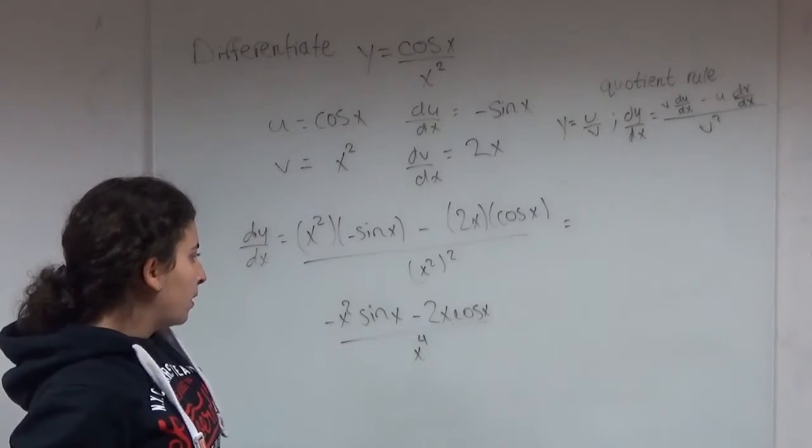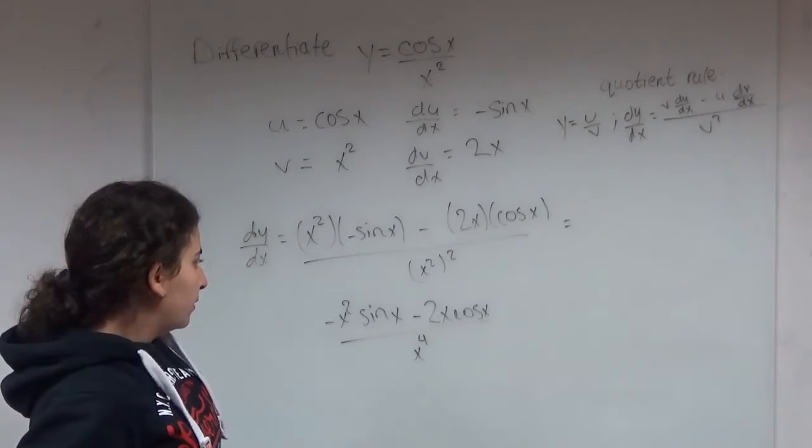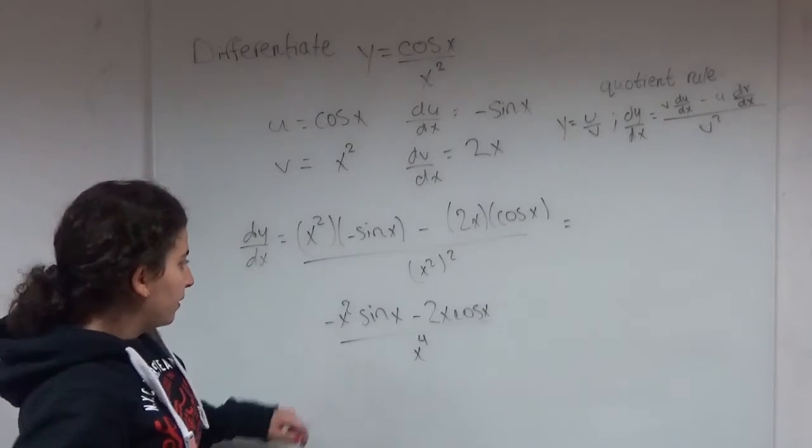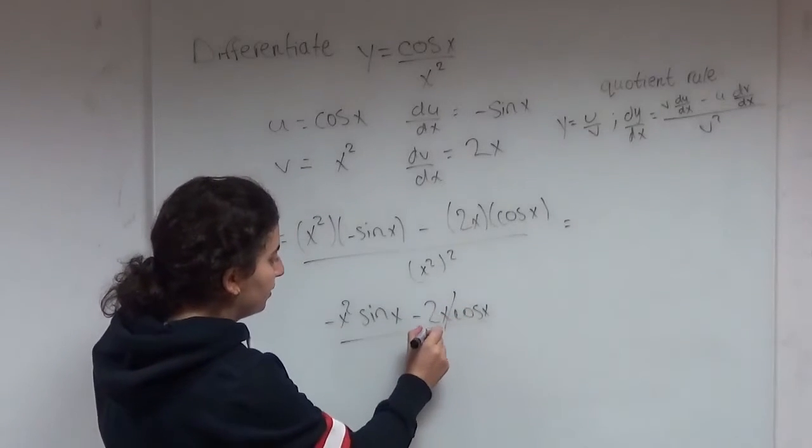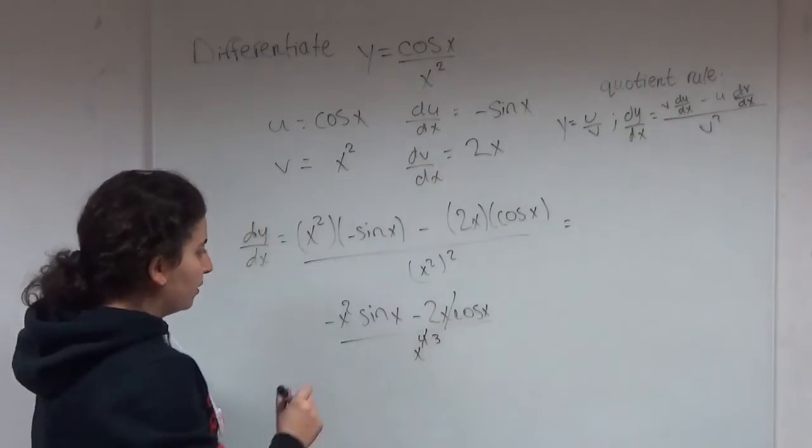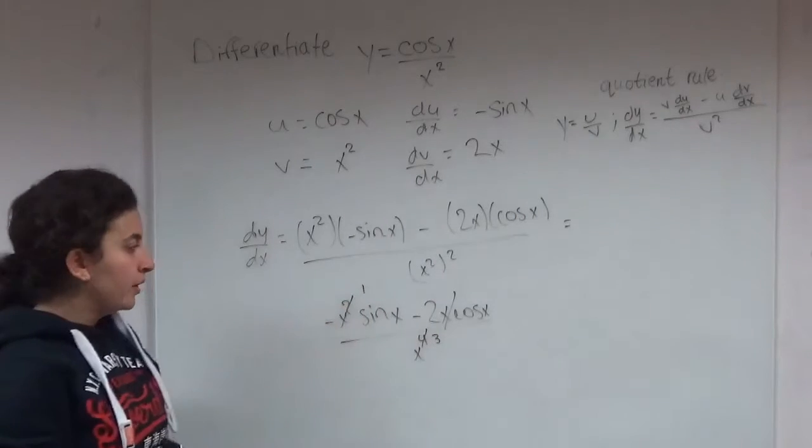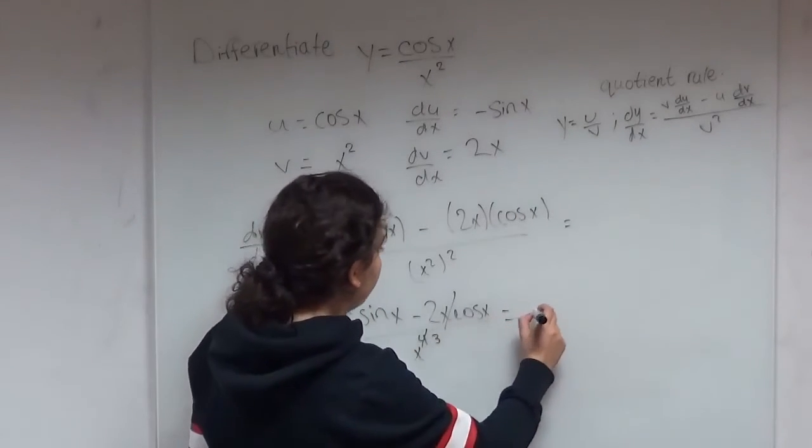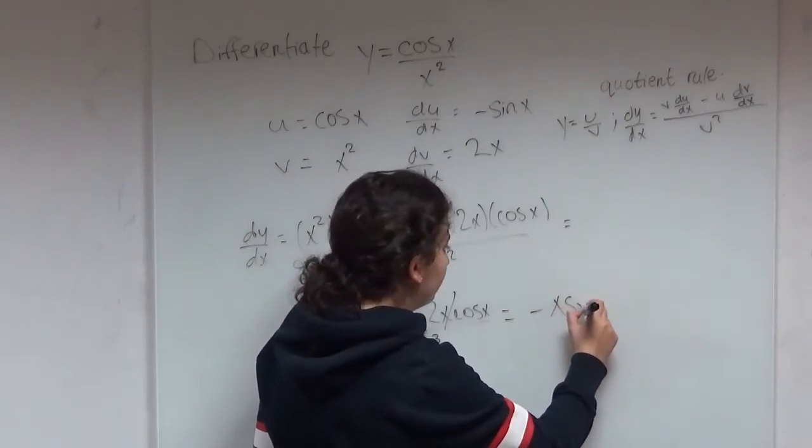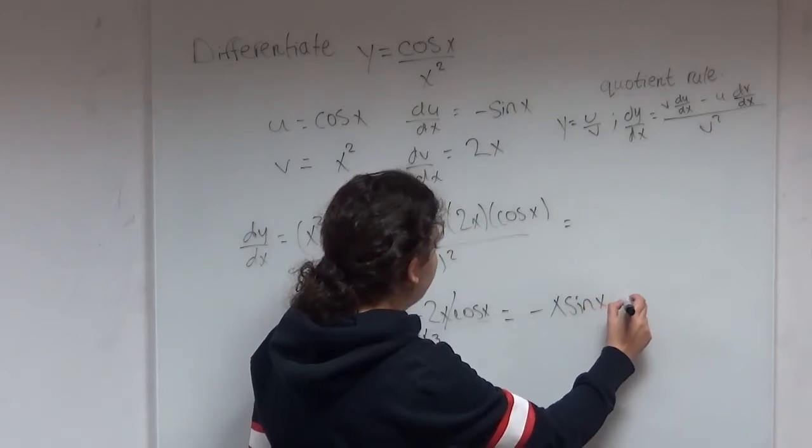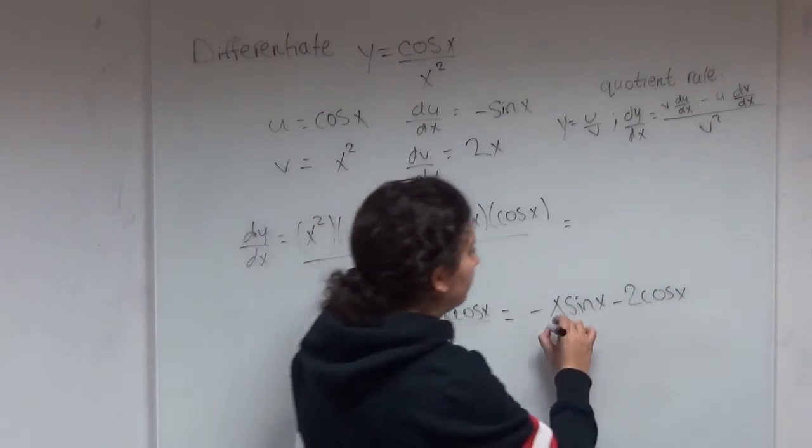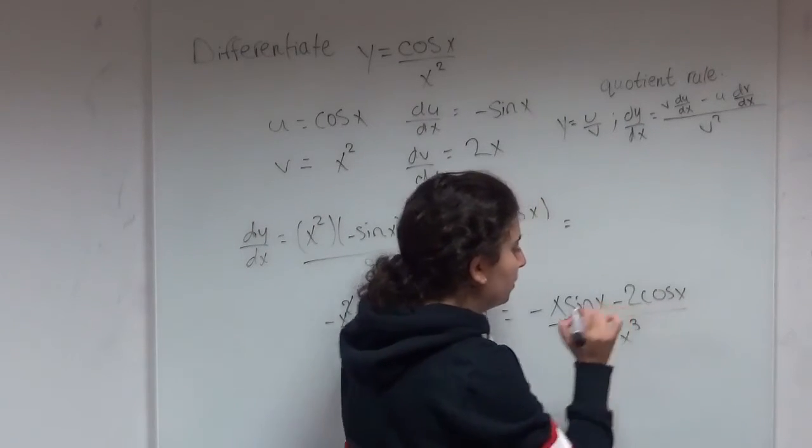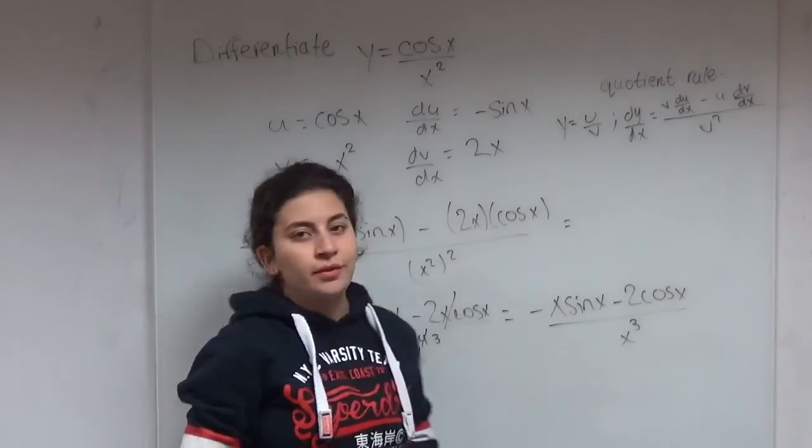And then always look for common factors. So we have an x in every single term. So we can cancel this x, cancel x from here, and cancel one from here. So we're left with minus x sine x minus 2 cos x divided by x cubed. So this is our final simplified answer.